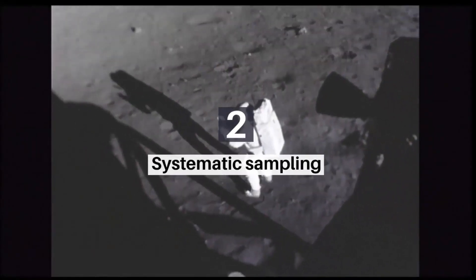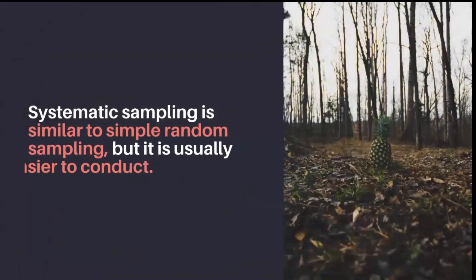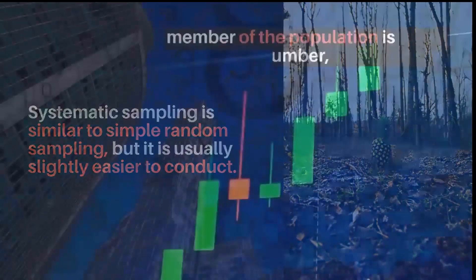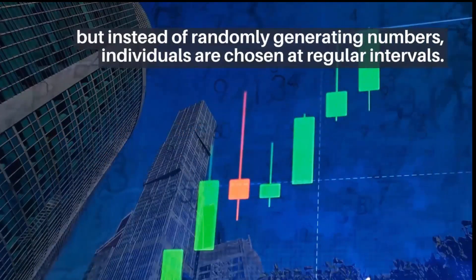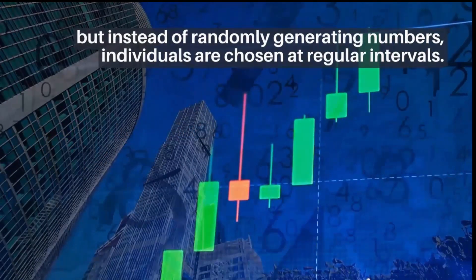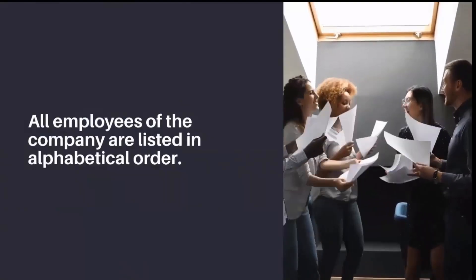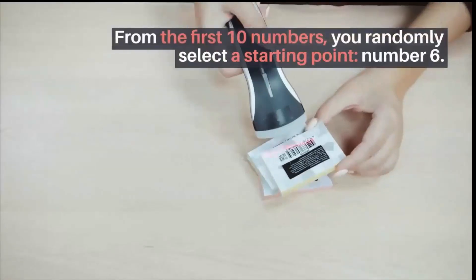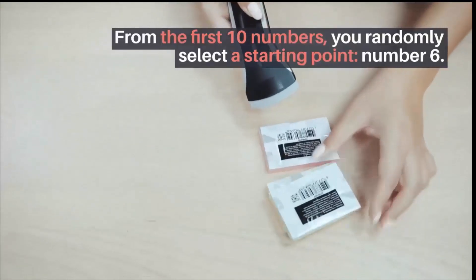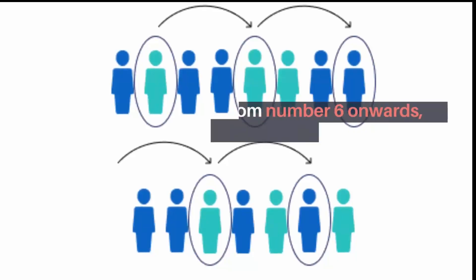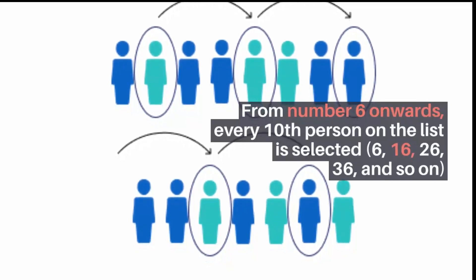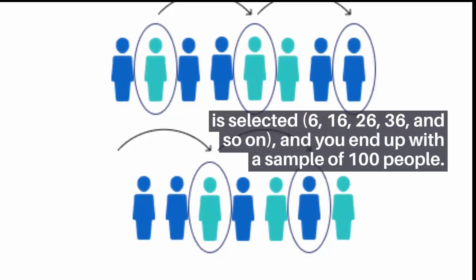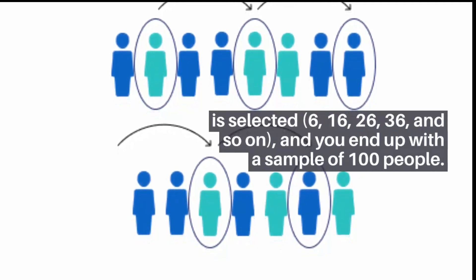2. Systematic sampling is similar to simple random sampling, but it is usually slightly easier to conduct. Every member of the population is listed with a number, but instead of randomly generating numbers, individuals are chosen at regular intervals. For example, all employees of the company are listed in alphabetical order. From the first 10 numbers, you randomly select a starting point — number 6. From number 6 onwards, every tenth person on the list is selected: 6, 16, 26, 36, and so on, and you end up with a sample of 100 people.